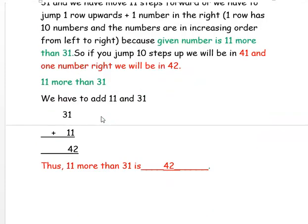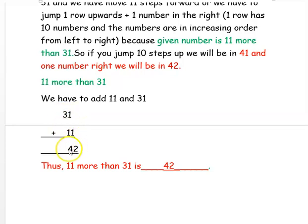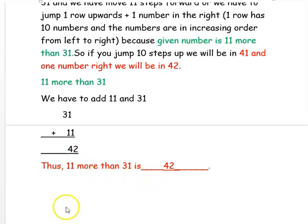We can also find this using addition: 31 plus 11 — 1 plus 1 is 2, and 3 plus 1 is 4 — so 11 more than 31 is 42.